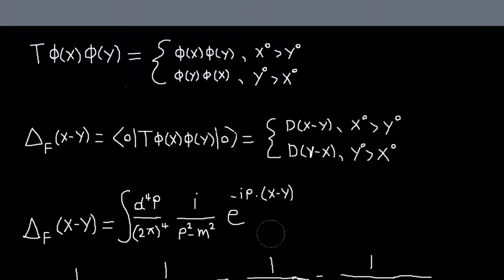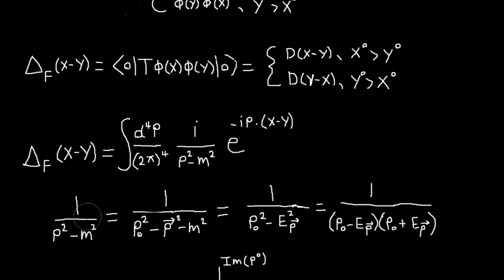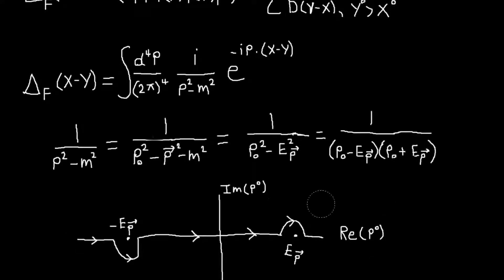So basically if we're going to do the integral over p^0, then we need to find the residue of this integrand. So we can do that, just if we write this denominator here. If we expand this out, p squared minus m squared, this is p^0 squared minus p squared minus m squared. But this is p^0 squared minus E_p squared, which I can factor like this. So we can see we have two poles, one at E_p and one at minus E_p.